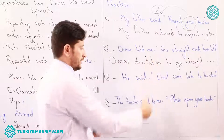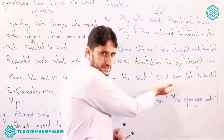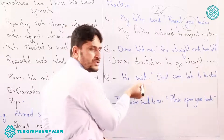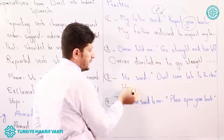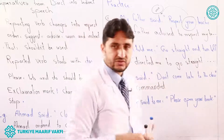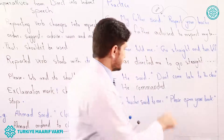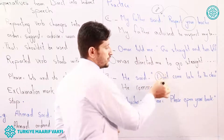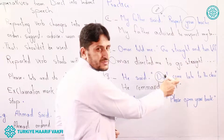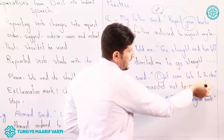'He said, Don't come late to the class.' This is a direct command, so we change the reporting verb to 'commanded' or 'ordered': 'He commanded.' Since this is a negative imperative, 'do' is omitted, leaving 'not.' The reported verb starts with 'to': 'not to come late to the class.' The rest of the sentence remains the same.